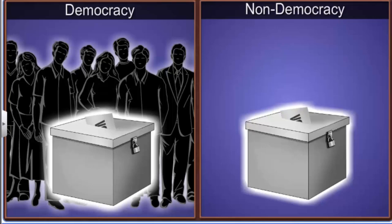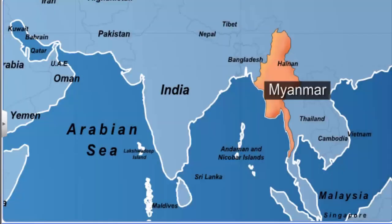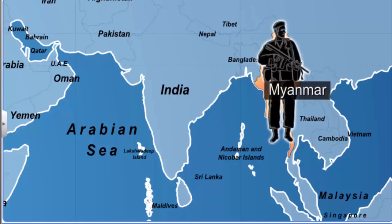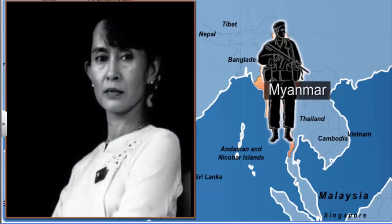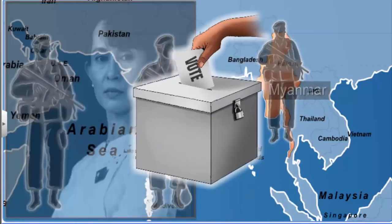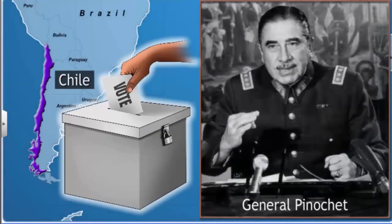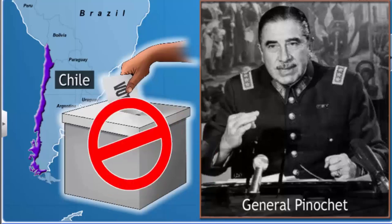From this simple definition, you can clearly distinguish democracies from non-democracies. For example, Myanmar is being ruled by the army — those in control of the army make decisions for the country. The people of Myanmar have not elected these rulers, so Myanmar is clearly not a democracy. General Pinochet, who led the coup in Chile, was also not elected by the people — his rule can be called a dictatorship.